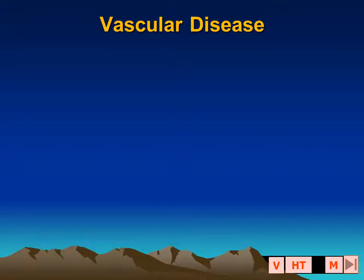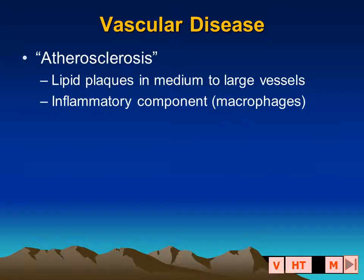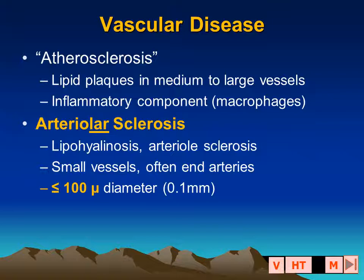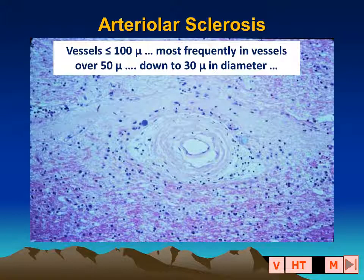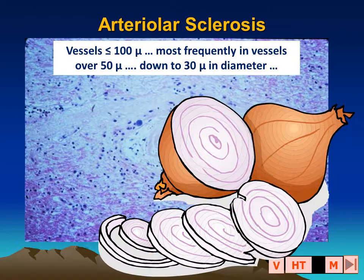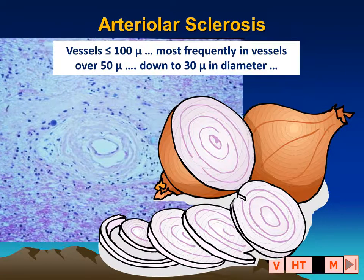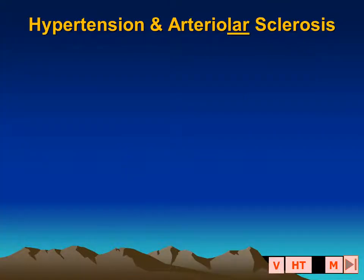The disease that occurs with long-standing hypertension affects very small arteries with a caliber typically less than 300 microns. The pathologic changes consist of the accumulation of lipohyalinosis and thickening of the small vessel walls, most commonly seen in vessels under 100 microns in diameter. In this high-power histologic view, we can see the onion skin thickening surrounding the lumen of this small vessel — the classic appearance of lipohyalinosis, or arteriolar sclerosis, common with hypertension.